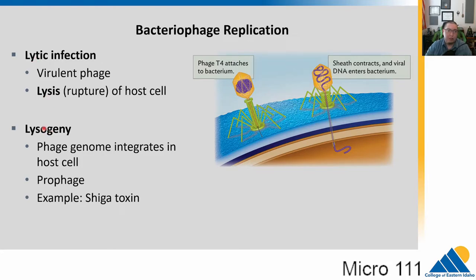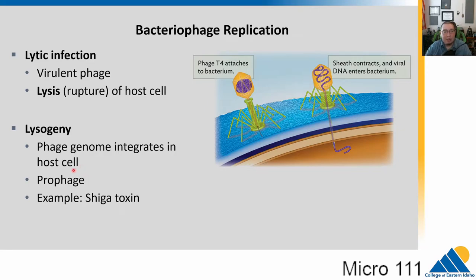There's also a phase called lysogeny, where the phage genome can actually integrate into the genome of the host cell. We call this a prophage because it has the capacity to make new phage particles but it is not happening. In some cases this can bring genes with it, like the shiga toxin gene. The prophage genome is integrated into the host cell genome, so it can bring other genes with it — that would be an example of transduction.